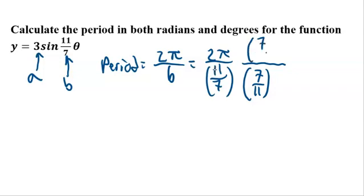And what we do to the bottom, we've got to do to the top. And if we flip this fraction and multiply top and bottom, it cancels out. 7's cancel, 11's cancel, that's pretty nice. And we're left with 2 pi times 7 over 11, which is 14 pi over 11. And there's no units here, but with this equation, this is in radians. So that's radians, so that's done.